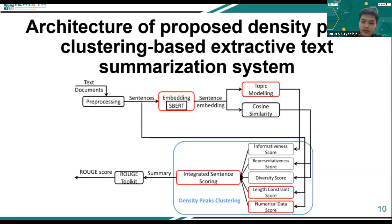Five scores are calculated for each sentence: informativeness score, representativeness score, diversity score, length constraint score, and numerical data score. Density peak clustering is done implicitly in the calculation of the representativeness score and diversity score.